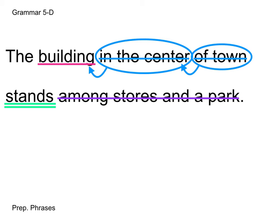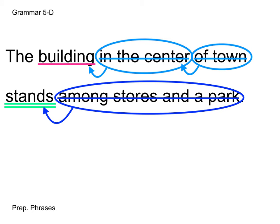Lastly, we have among stores and a park. We know that it's not modifying building — in this instance, it's telling us where it is standing. So we're going to circle it and draw an arrow. Now that we have these prepositional phrases reviewed, hopefully you feel a little bit more confident about these different types of phrases. It's so important to really look at these phrases and how they interact with the words in the sentence. And don't forget that we may have past participles within prepositional phrases, which is what we're going to look at with the sentence diagram.